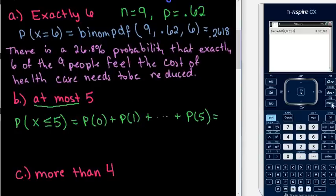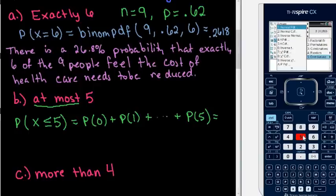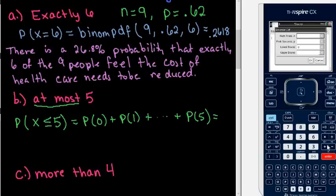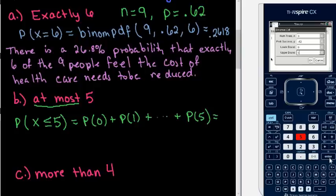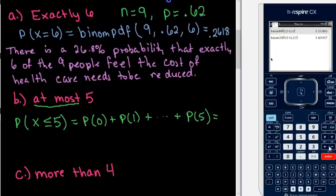You can find each individual probability and add them together, or you can use the built-in feature. We go to Menu, Probability, Distributions, and this time we want binomial CDF — option E. The number of trials is still 9, the probability of success is still 0.62. This time it asks for a lower bound, so since we want at most 5, our lower bound is 0 and upper bound is 5. We hit enter and get a probability of 0.4669.